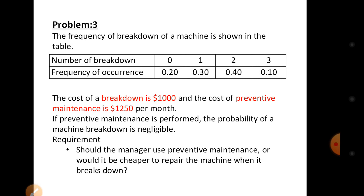For the machine breakdown frequency table: number of breakdowns zero has a probability of 0.2 (20%); one breakdown has a probability of 0.3 (30%); two breakdowns has a probability of 0.4 (40%); three breakdowns has a probability of 0.1 (10%).